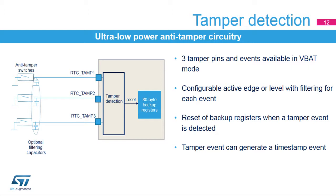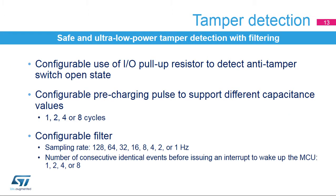In addition, a tamper event prevents any read access to the backup SRAM until its erase operation is finished. A tamper event can generate a timestamp event. The tamper detection circuit includes an ultra-low-powered digital filter. The internal I/O pull-up can be used to detect the anti-tamper switch state. The pull-up is applied only during the pre-charging pulse in order to avoid any consumption if the tamper pin is at a low level.